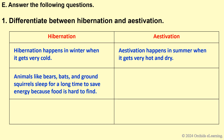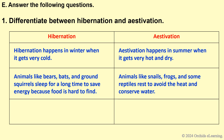Animals like bears, bats, and ground squirrels sleep long to save energy because food is hard to find. Animals like snails, frogs, and some reptiles rest to avoid the heat and conserve water. Hibernation means winter rest; aestivation means summer rest.